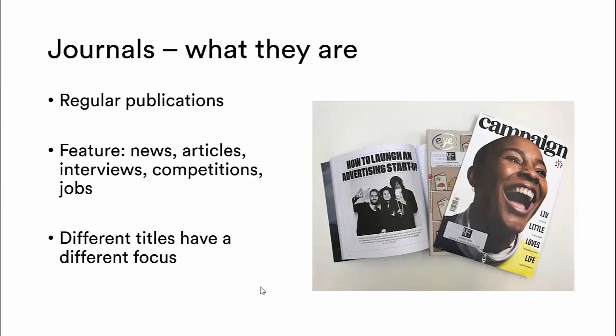The second type of resource useful for your industry research report will be journals. We do have quite a lot of journals in the library, but we've picked out the ones that have a specific focus on industry. Journals are regular publications; they tend to be monthly or bi-monthly. Most of the ones we picked here feature news, articles, interviews, competitions, and some also feature jobs. So they're a very good way of finding out what people are doing in industry. We have a number of different titles and they all have a slightly different focus.